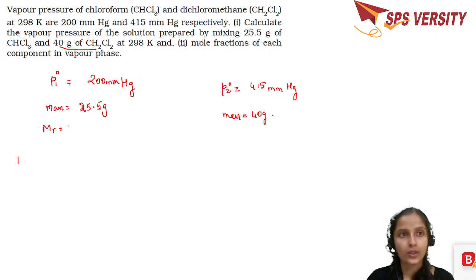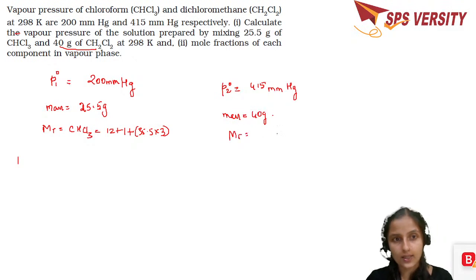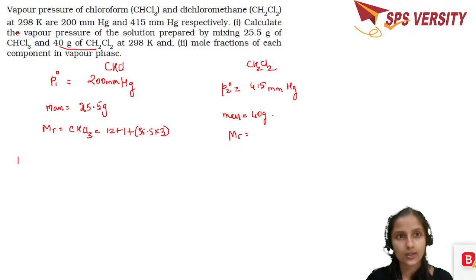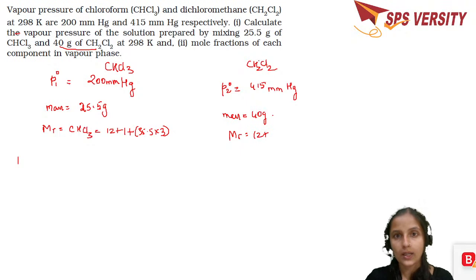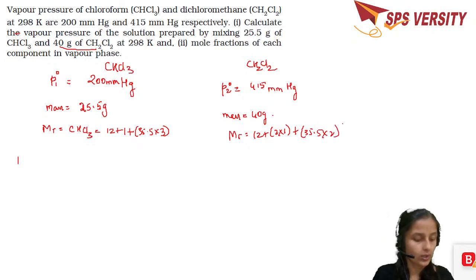We can calculate the molar mass. For CHCl3: 12 + 1 + (35.5 × 3). For CH2Cl2: one carbon is 12, two hydrogens is 2 × 1 = 2, and two chlorines is 35.5 × 2. Let me quickly calculate these values.